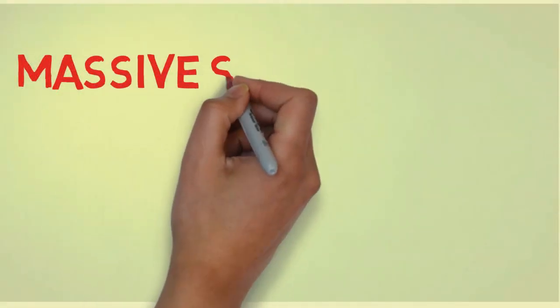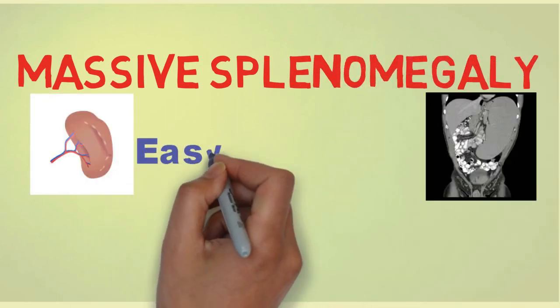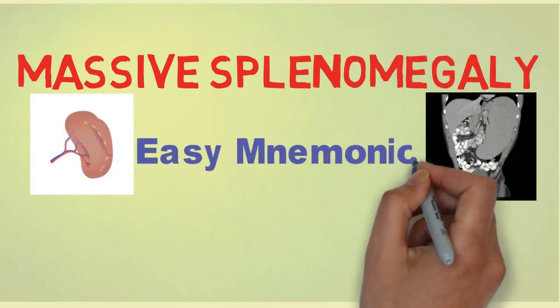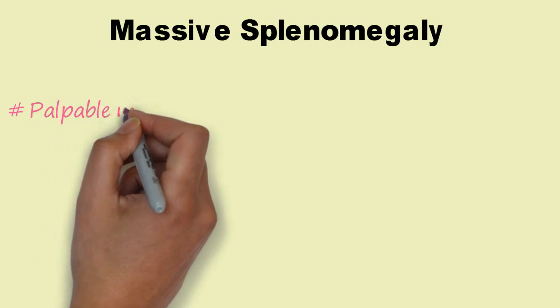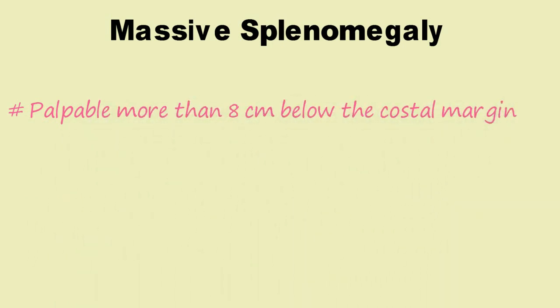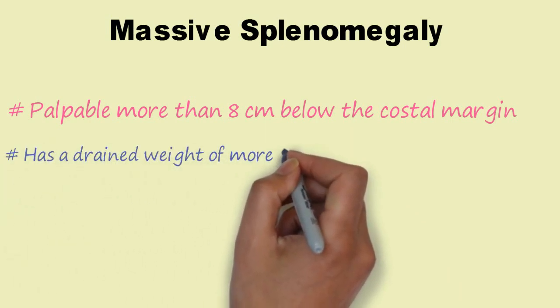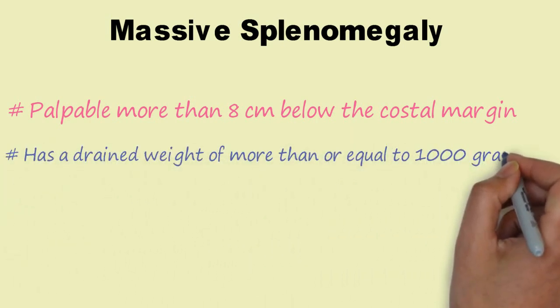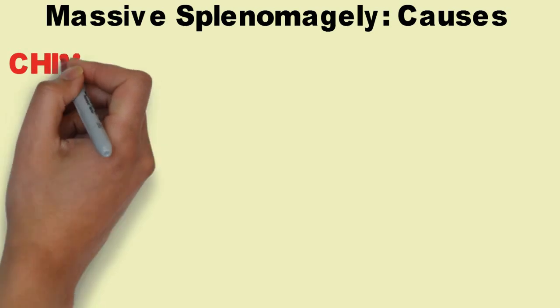In this video, we learn an easy mnemonic to remember the causes of massive splenomegaly. Massive splenomegaly is defined as a spleen which is palpable more than 8 cm below the subcostal margin, or a spleen which has a weight of more than or equal to 1 kg. The mnemonic for massive splenomegaly is 'CHIMP HAS BIG SPLEEN'.